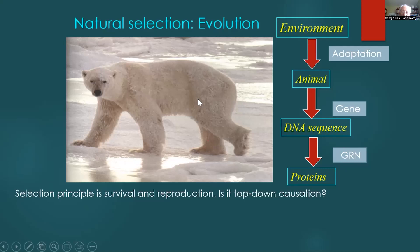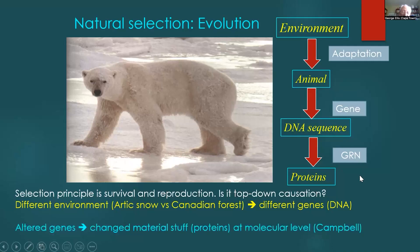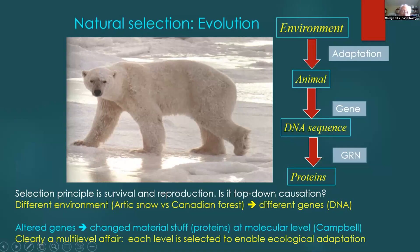The selection principle of survival and reproduction is top-down causation. Consider a bear in the Canadian forest — you get different genes in DNA, producing proteins that give brown or black fur so the bear can hunt well in the forest. Altered genes mean changed protein types at the molecular level. Donald Campbell wrote about how this is an example of downward causation. This is clearly a multi-level affair: ecological adaptation selects DNA sequences, which give the proteins you want — downward causation all the way to the protein level.